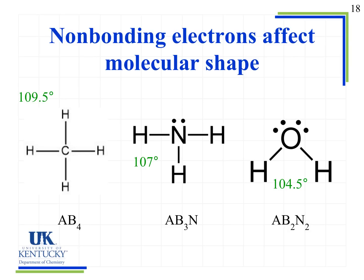The examples we've looked at so far all had bonding groups — no lone pairs around the central atoms. For methane (CH4), we have central atom A with four bonding groups (AB4), giving a bond angle of 109.5 degrees. That's the angle from hydrogen to carbon to hydrogen. Even though it may look planar in diagrams, this molecule exists in three dimensions and is not a planar molecule.